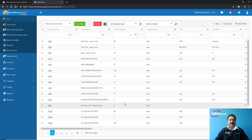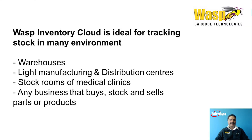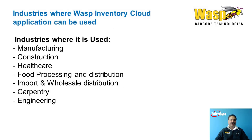Today we're going to introduce you to the Inventory Cloud system. Earlier, Wasp developed an on-premise solution for a number of years, and recently they've introduced a cloud solution as well. This solution is used in warehouses, light manufacturing, distribution, stock rooms of medical centers or medical clinics, and any other business that buys and sells parts and products. Industries include manufacturing, construction, healthcare, food processing, distribution, import and wholesale, carpentry, and engineering.